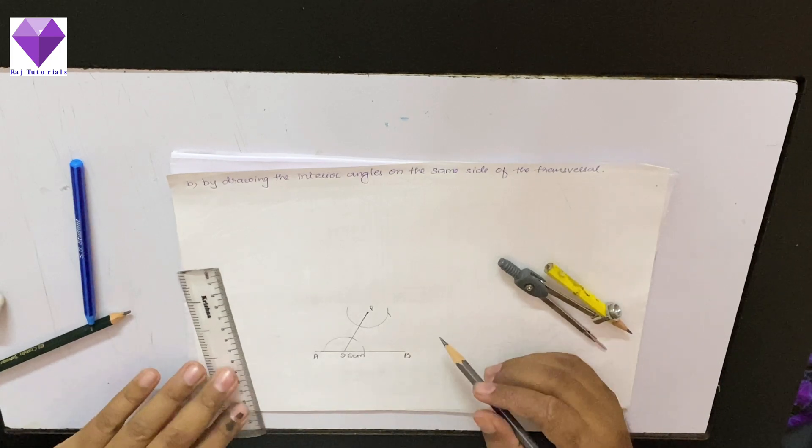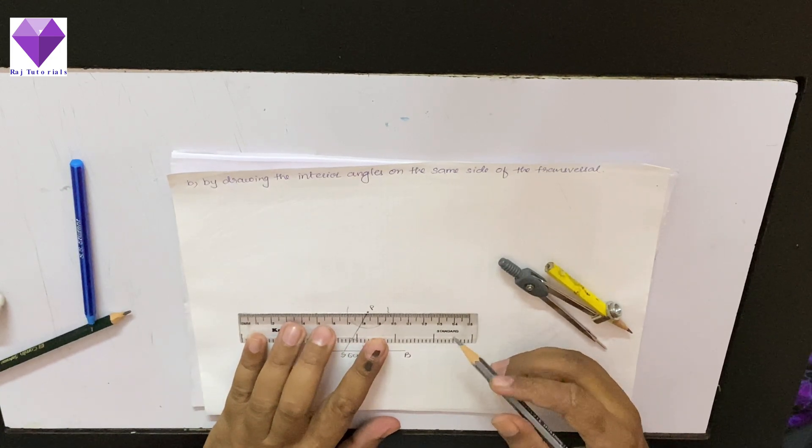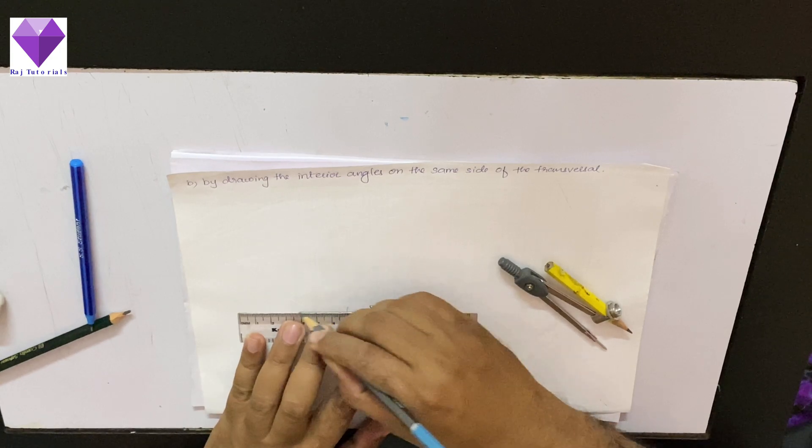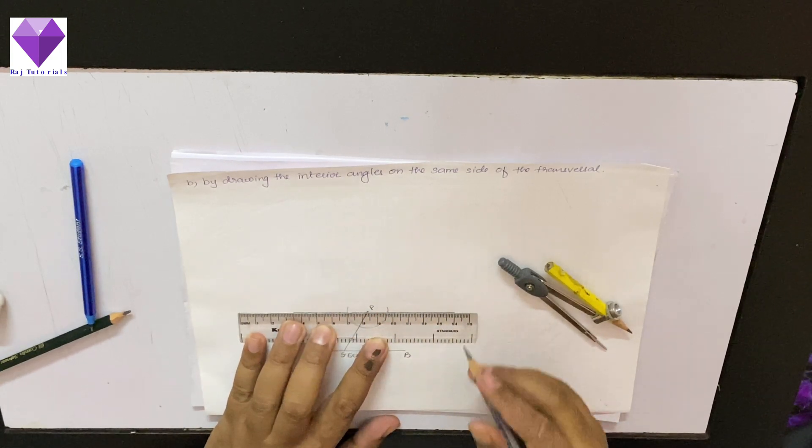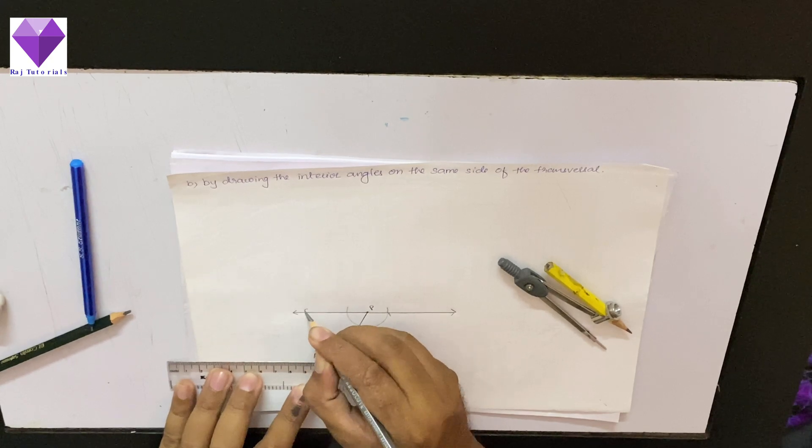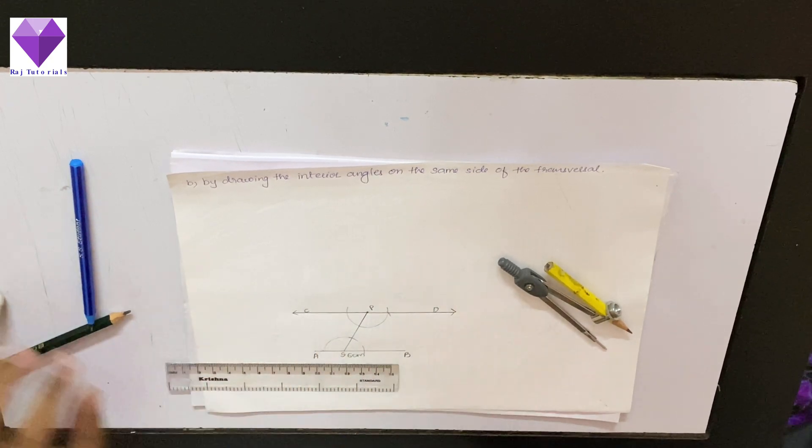So, now this two points I will join to get my line segment. Or a line CD, which is parallel to AB. Thank you.